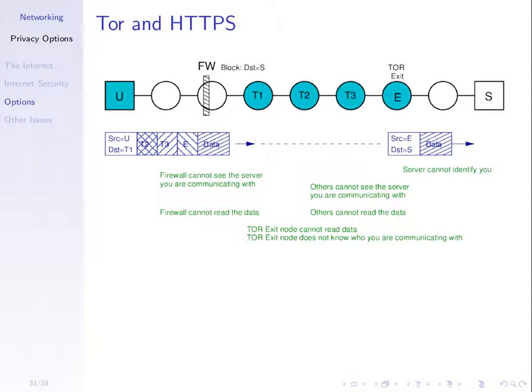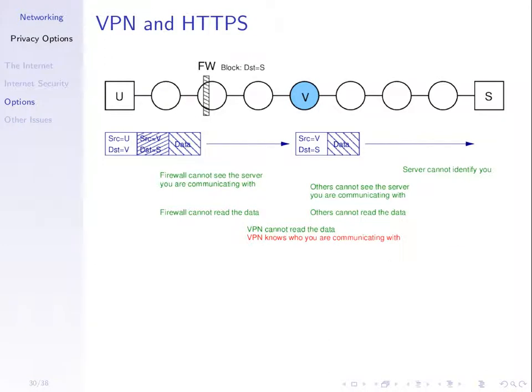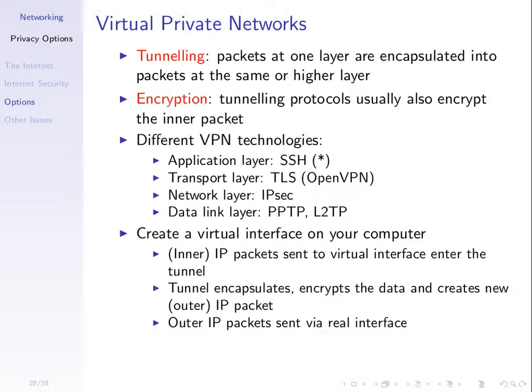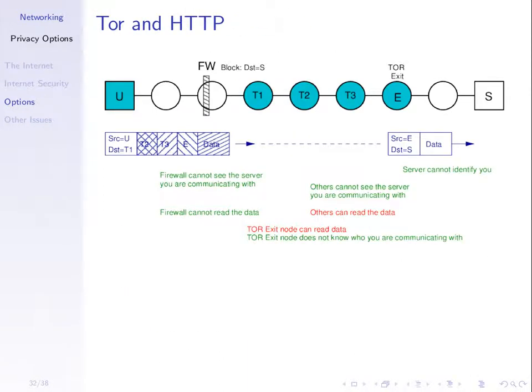Tor is the best of the three techniques in terms of achieving security objectives. With a VPN, you must trust the VPN server because it knows who you're communicating with. With a web proxy, the proxy knows who you're communicating with and can even read your data — so more trust is placed in the proxy. With Tor, it's like having multiple VPN servers T1, T2, T3, and E, but the way the source encrypts the packet means you don't have to trust any of them. They only know their immediate prior and next relay — not the original source or final destination.